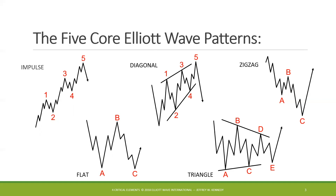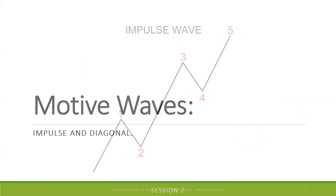The wave principle gives us context for market analysis by classifying price action into two specific modalities: motive waves and corrective waves. There are two types of motive wave patterns — the impulse wave and the diagonal. As for corrective wave patterns, there are three: the zigzag, the flat, and the triangle. For those already familiar with the wave principle who ask about expanded flats or running flats — those are variations, derivatives of the core flat pattern.